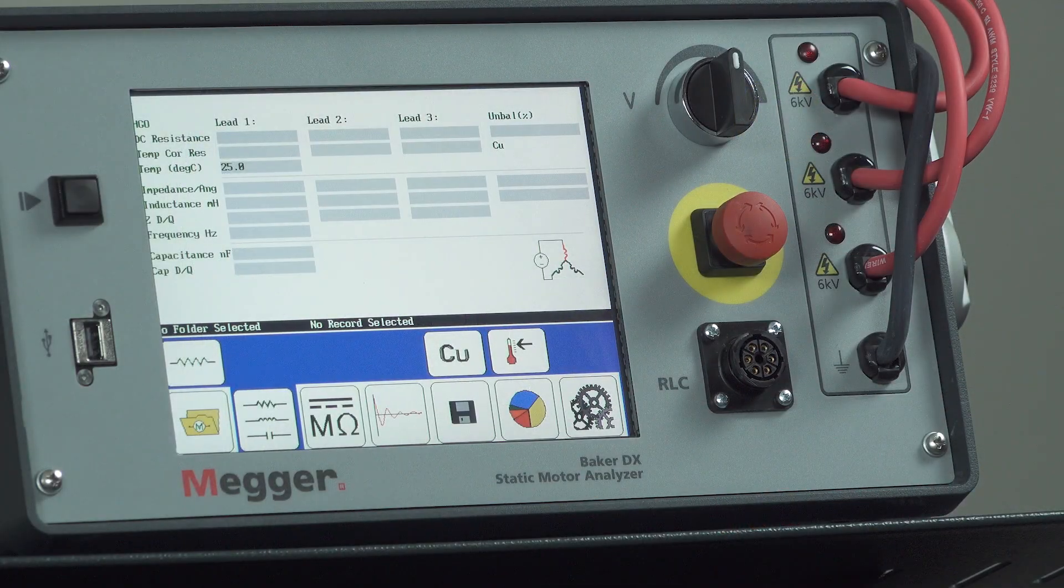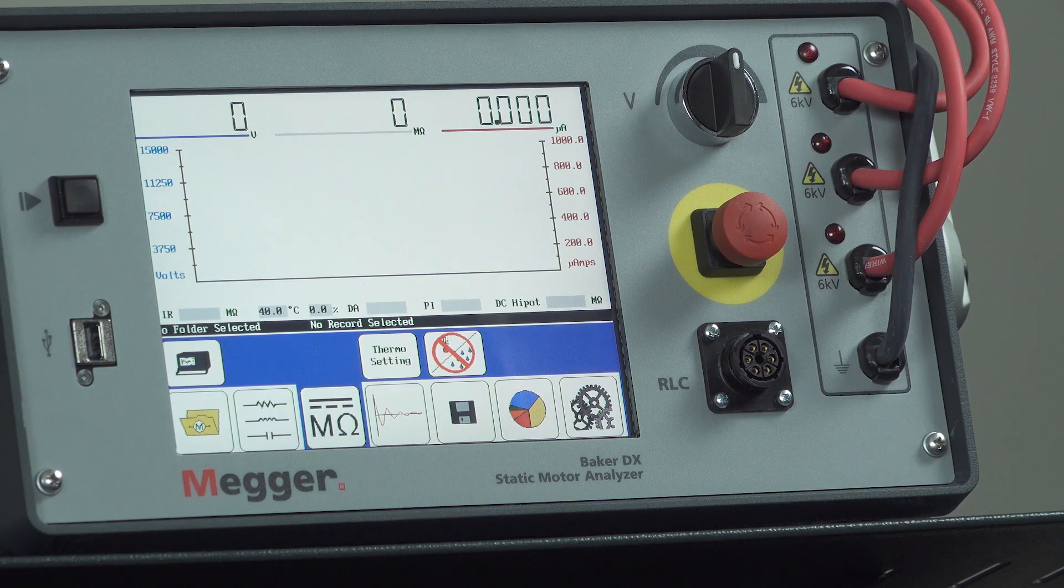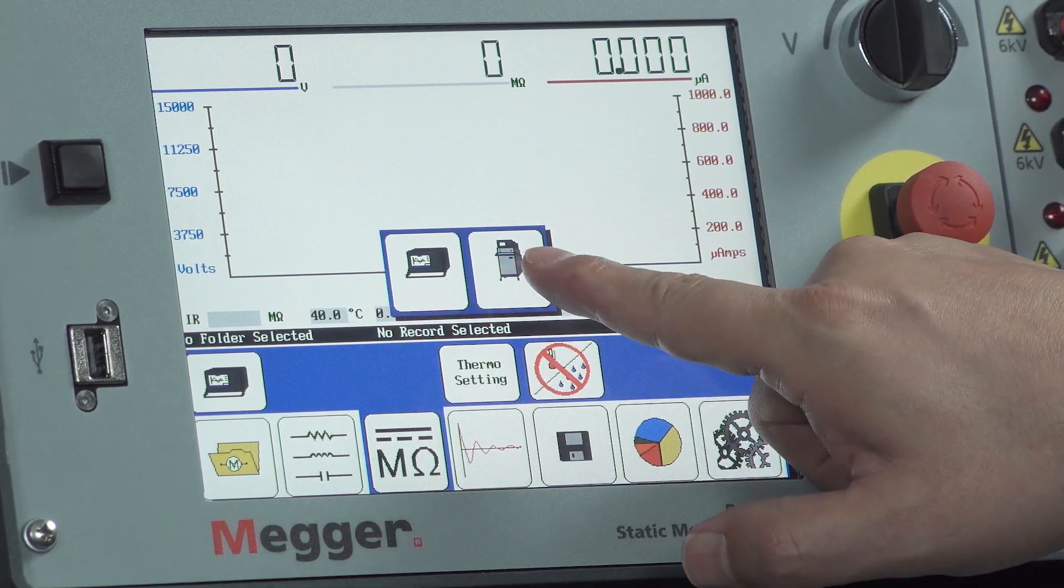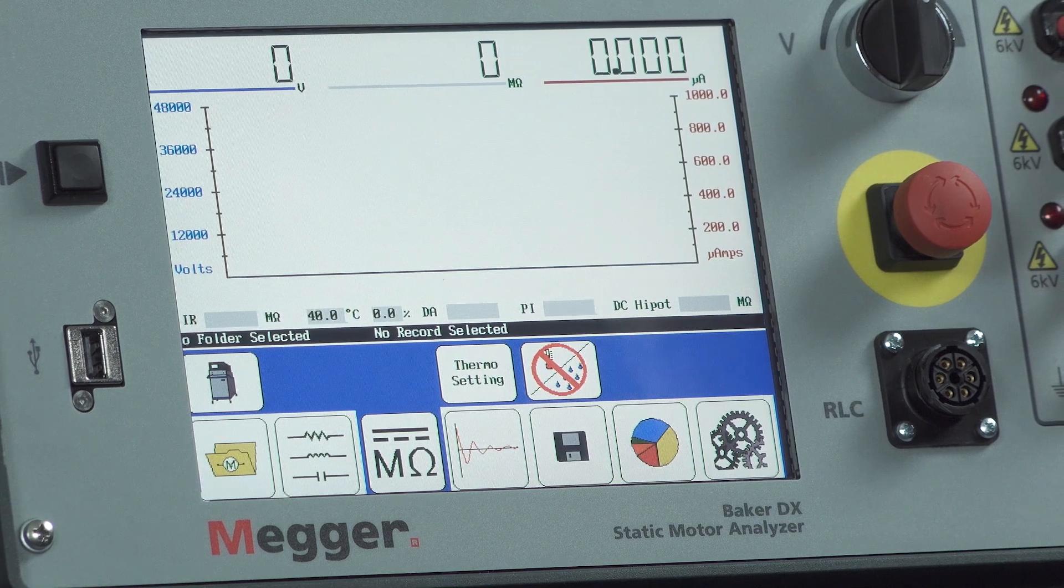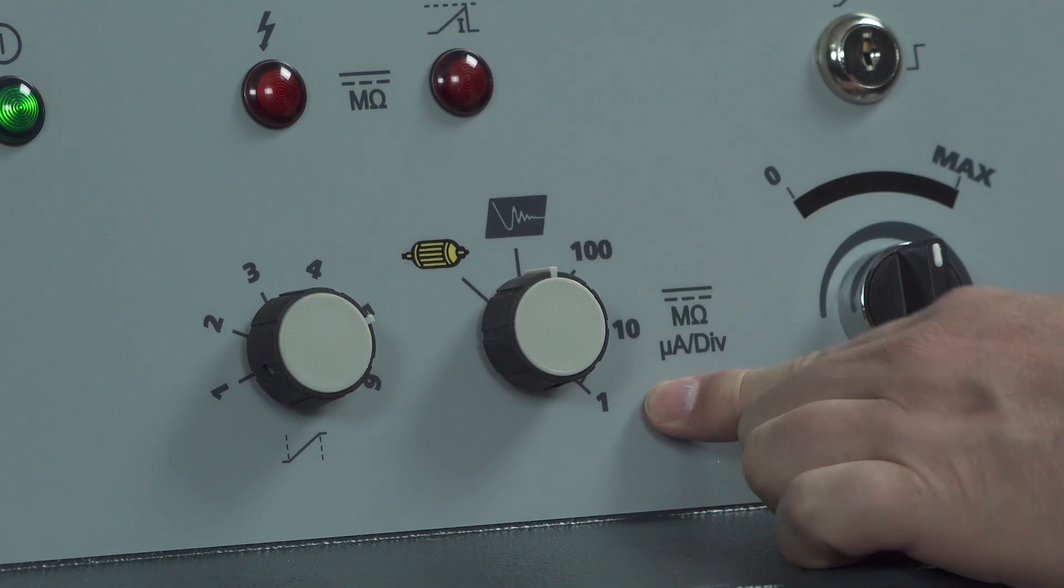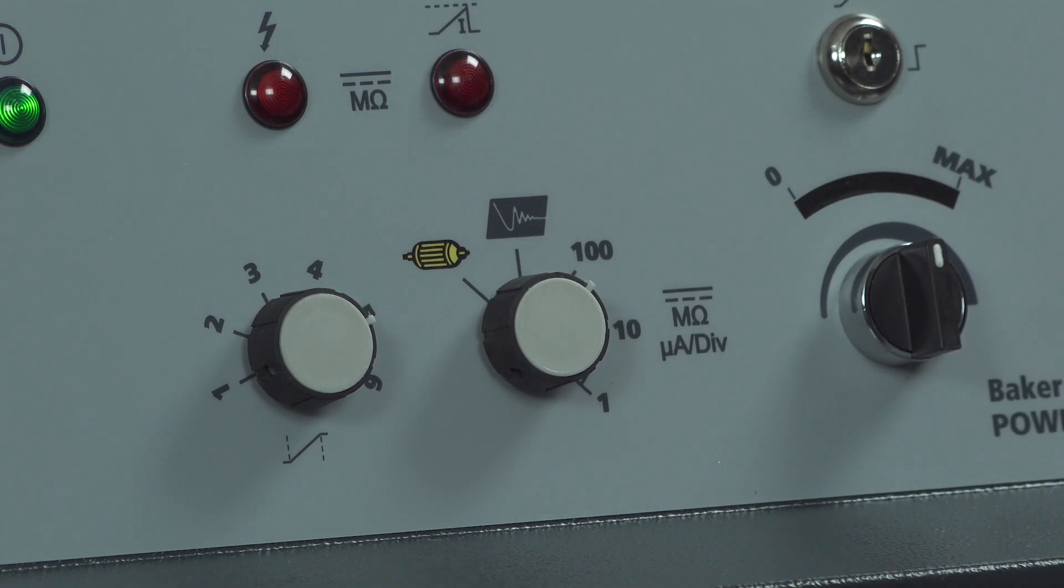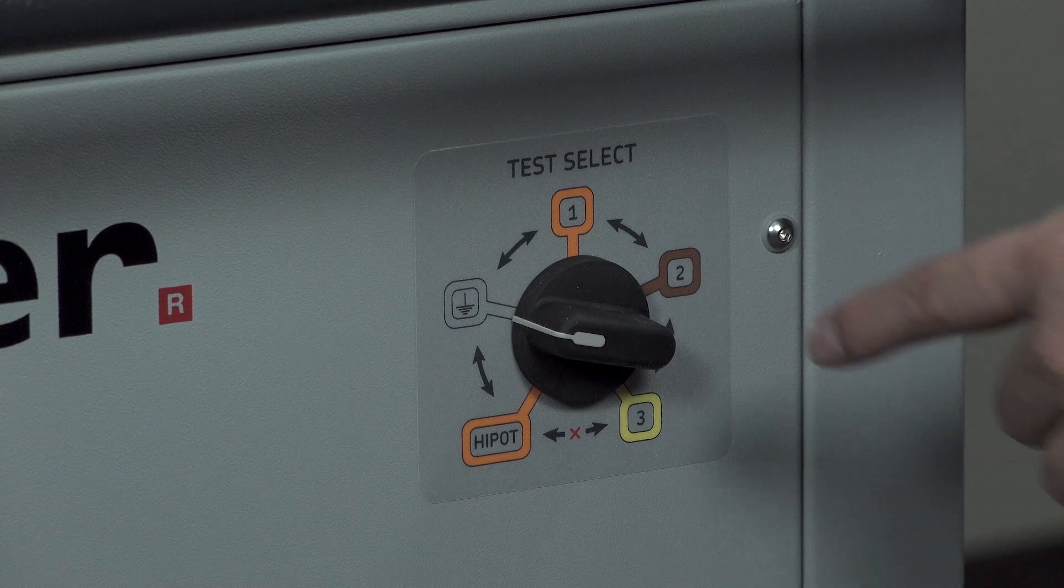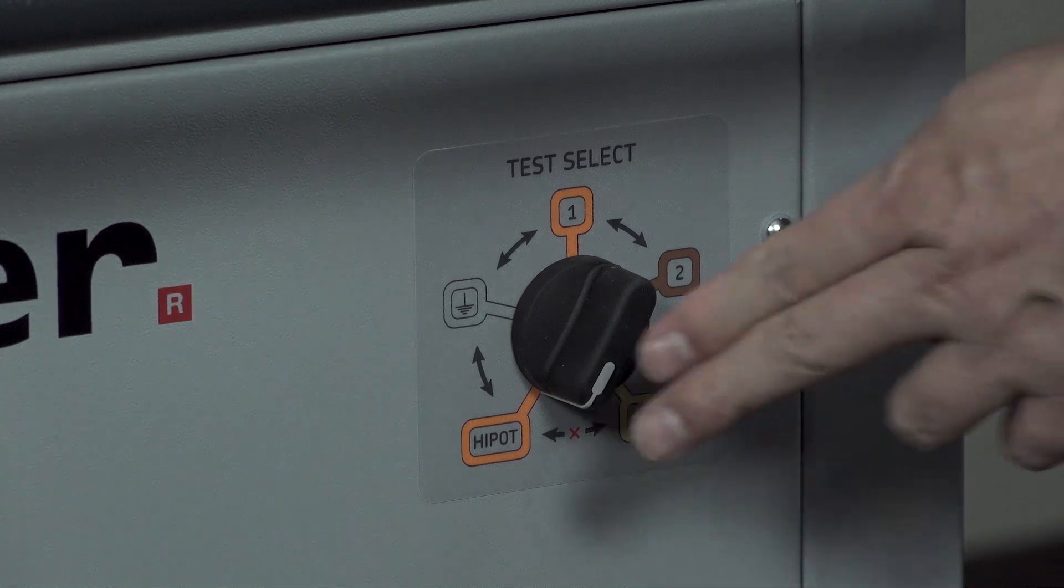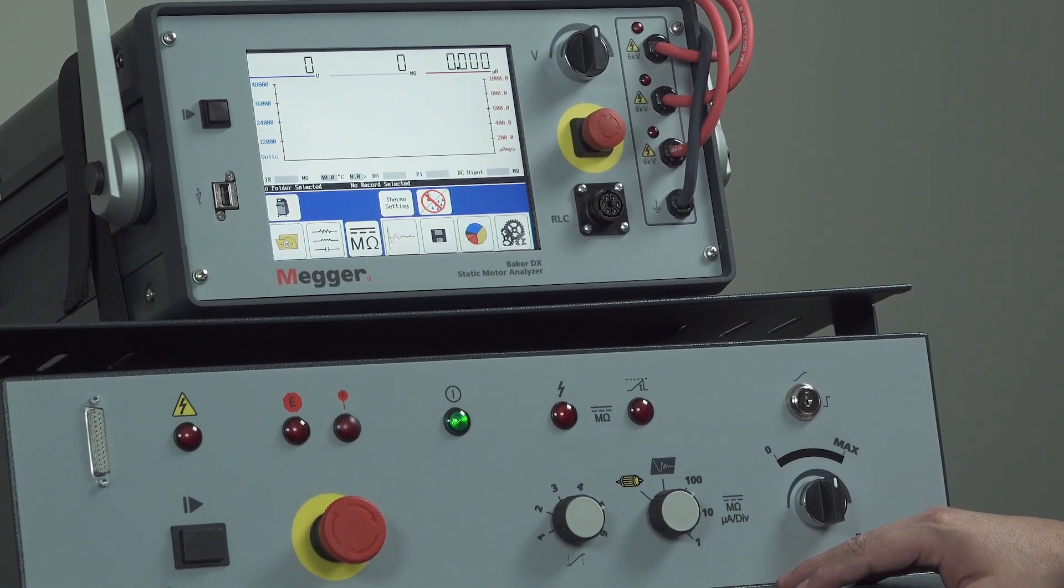To begin the step voltage high pot test, we need to select the megaohm DC test icon, and then select the proper test configuration. In this case, we'll select the host DX with power pack icon. Now we'll take the function selector switch to the DC high pot selection of either 110 or 1 microamp per division. We'll start with the 100 microamp per division setting. Now we'll take the test lead selector switch from the ground position to the high pot position, and that will connect all three high voltage leads to the high voltage power supply. We're ready to proceed with the step voltage high pot test.